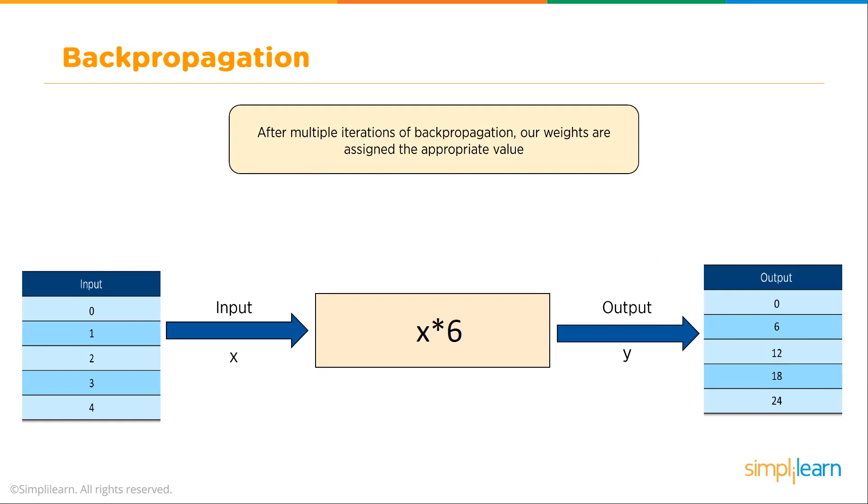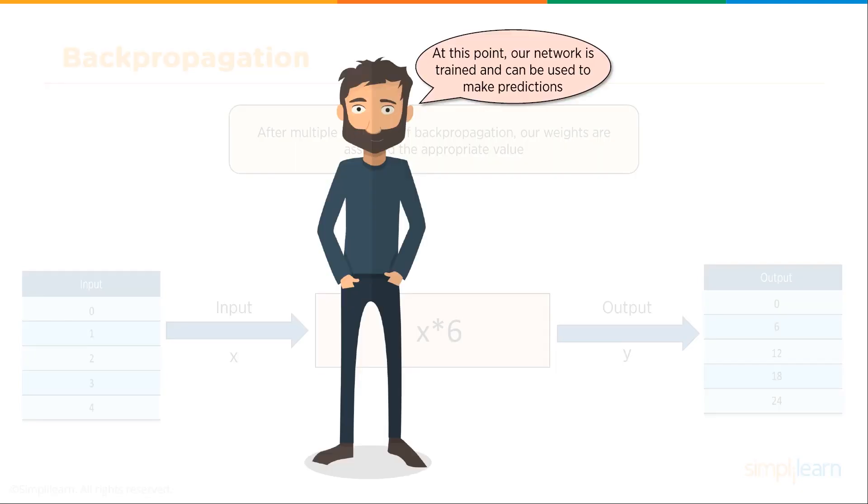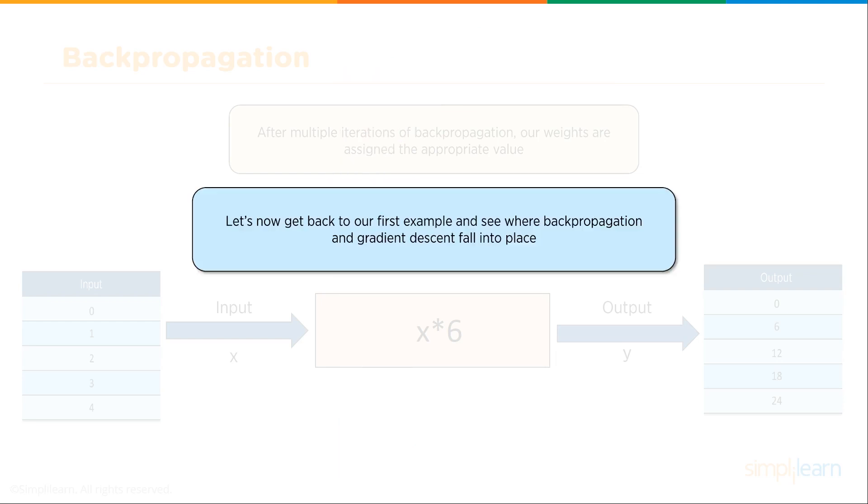10 is a small number, hence the weight requires to be tuned quite less. A negative slope indicates that the weight needs to be reduced rather than increased. After multiple iterations of back propagation, our weights are assigned the appropriate value. Eventually we get that the weight is 6 for the single node problem. At this point our network is trained and can be used to make predictions.